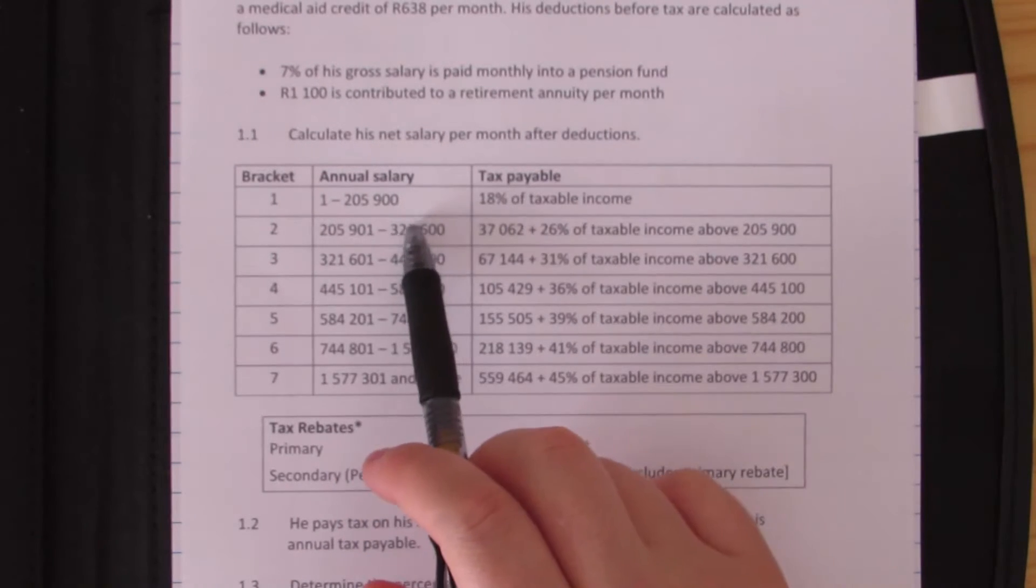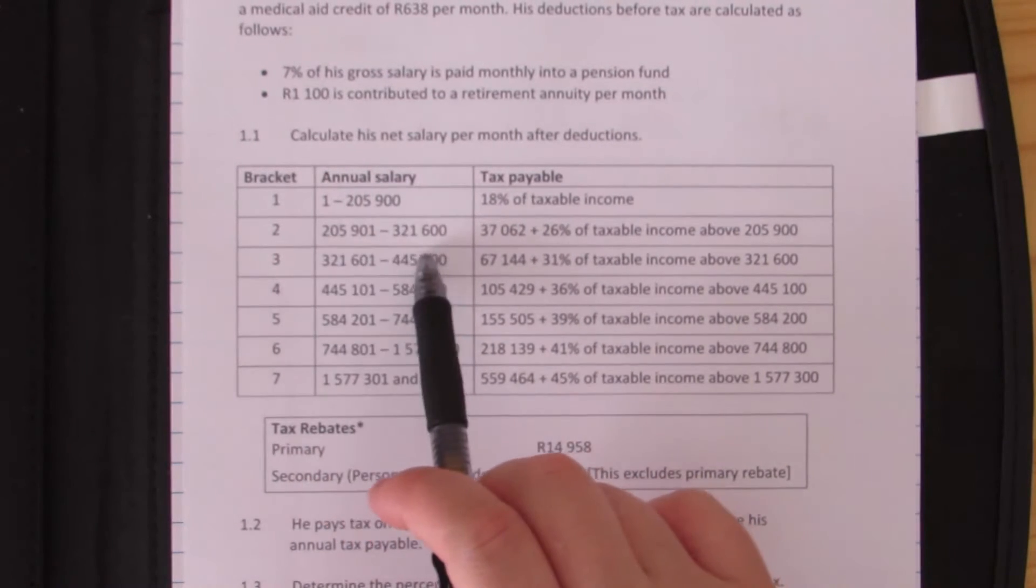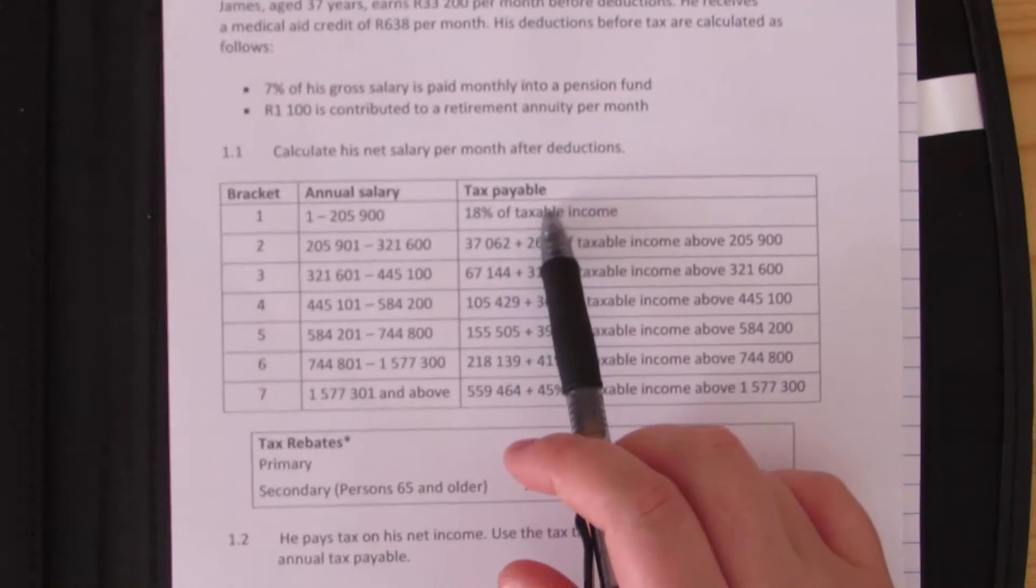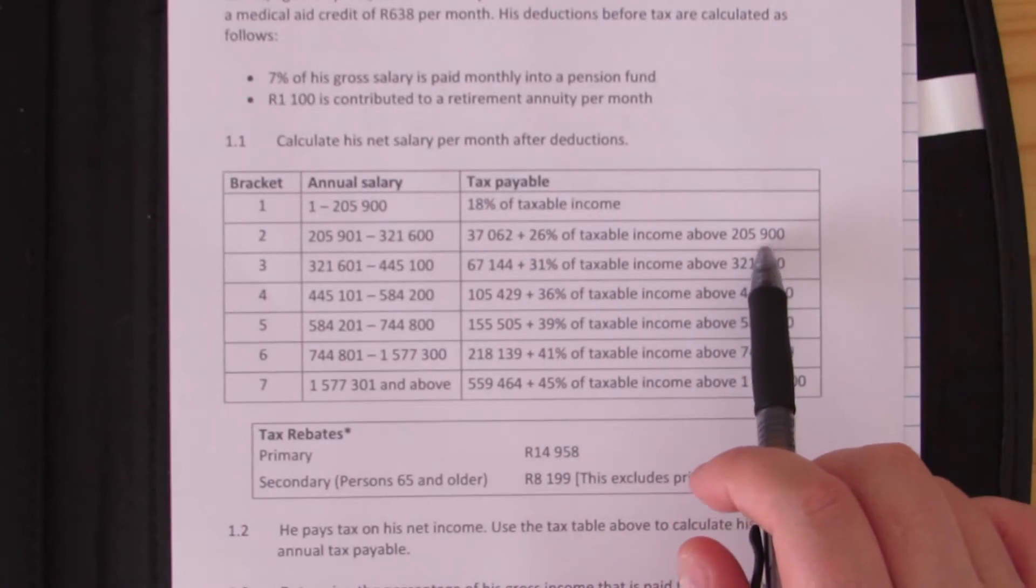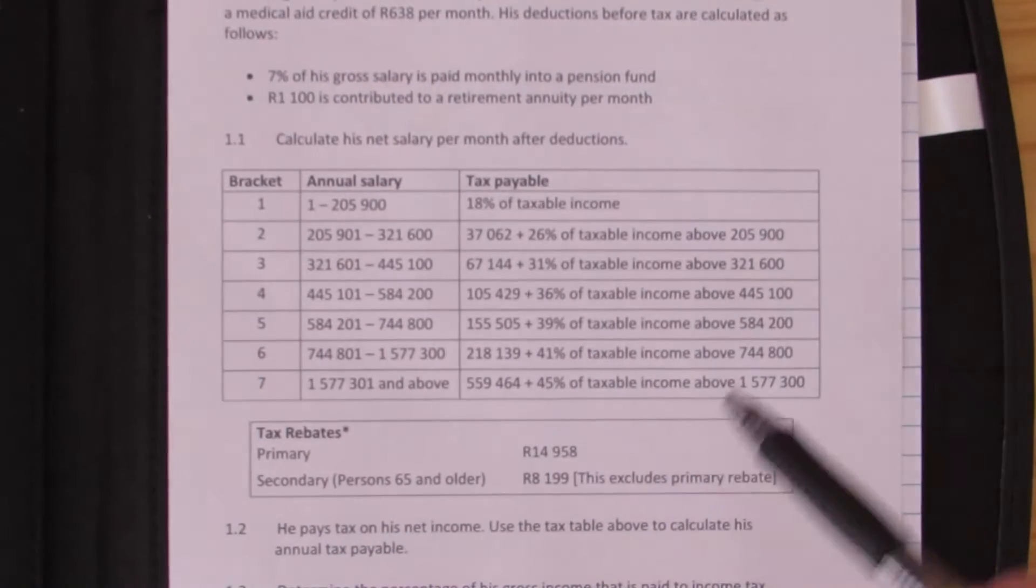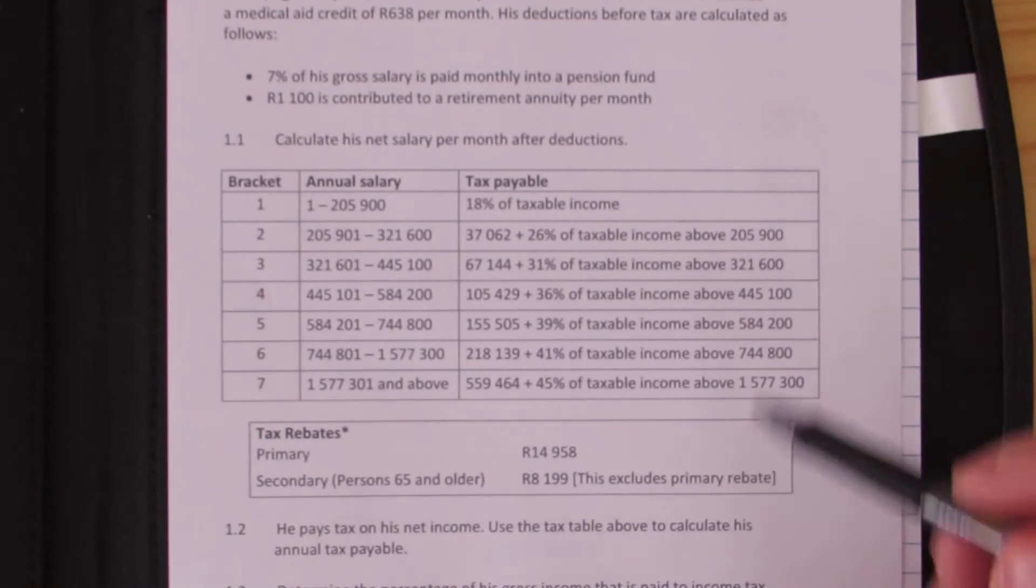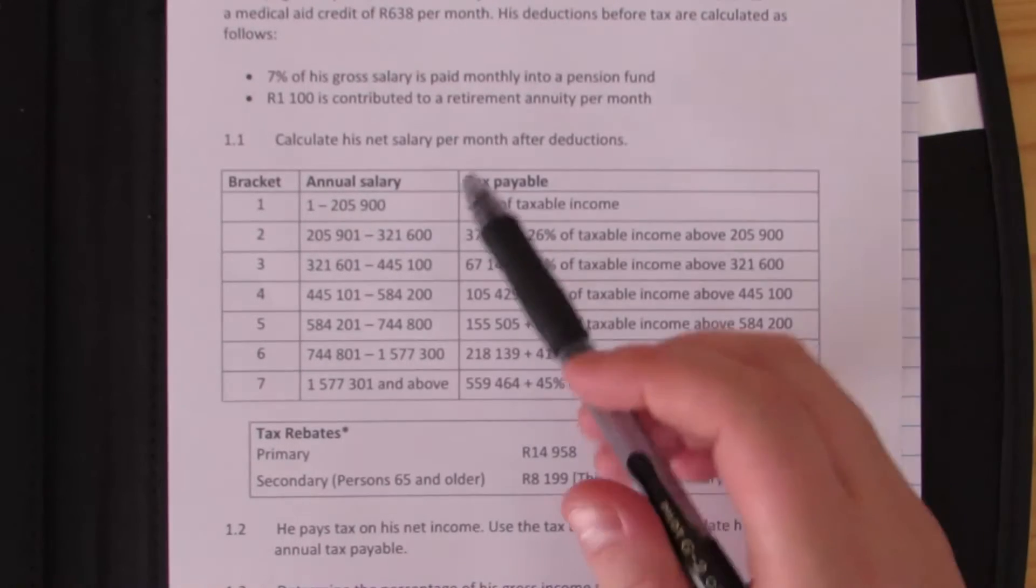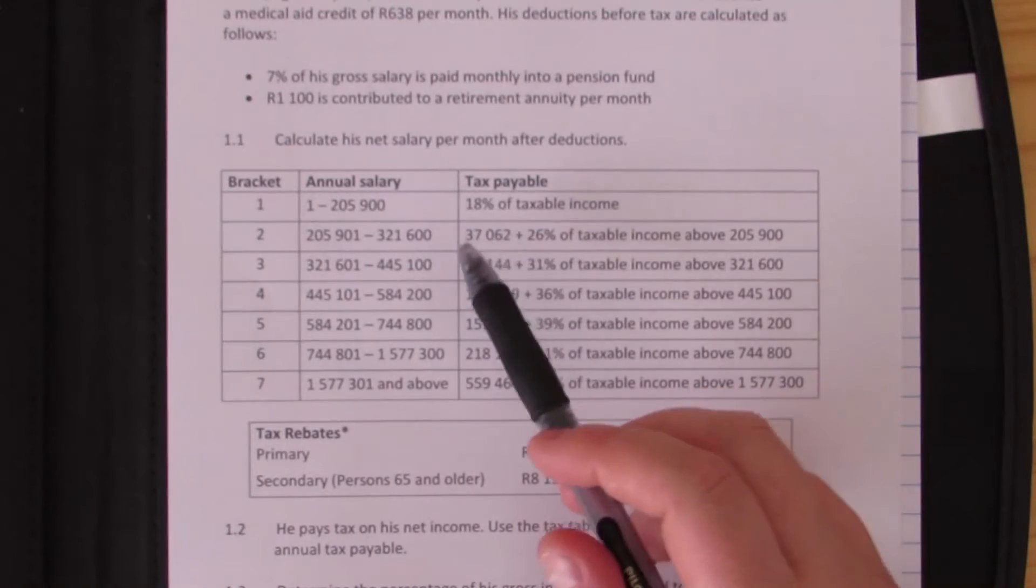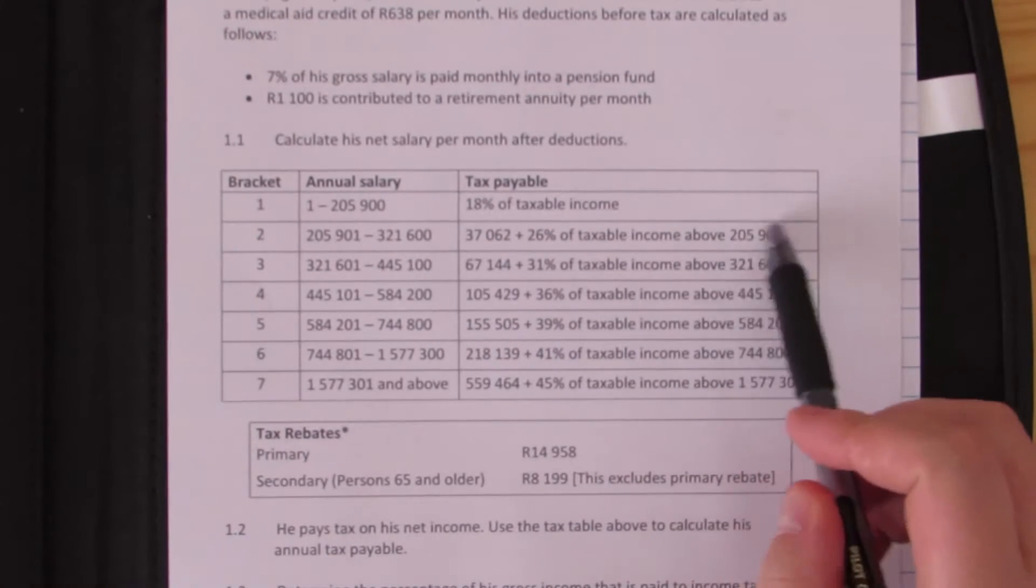Each step here is a different band for salary and income. If you earn between 1 rand and 205,900, then 18% of that needs to be paid as tax before we take off the rebates. If you're sitting in this band, you'll be paying a fixed amount of tax plus 26% of the income above 205,900. This portion here, this fixed amount, is actually the tax on the first 205,900.